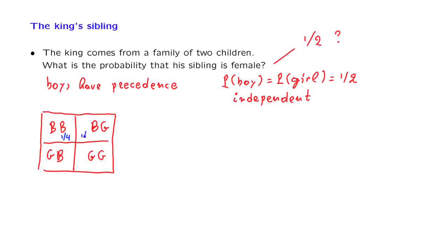So each one of these four outcomes has the same probability, 1 fourth. Now, we know that there is a king. So there must be at least one boy. Given this information,